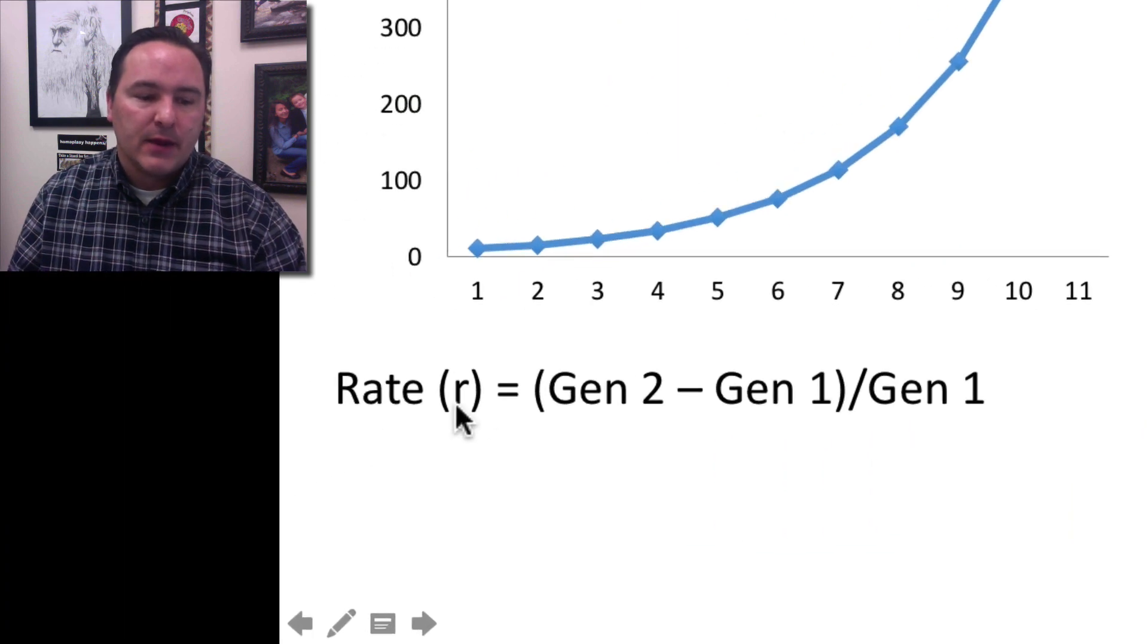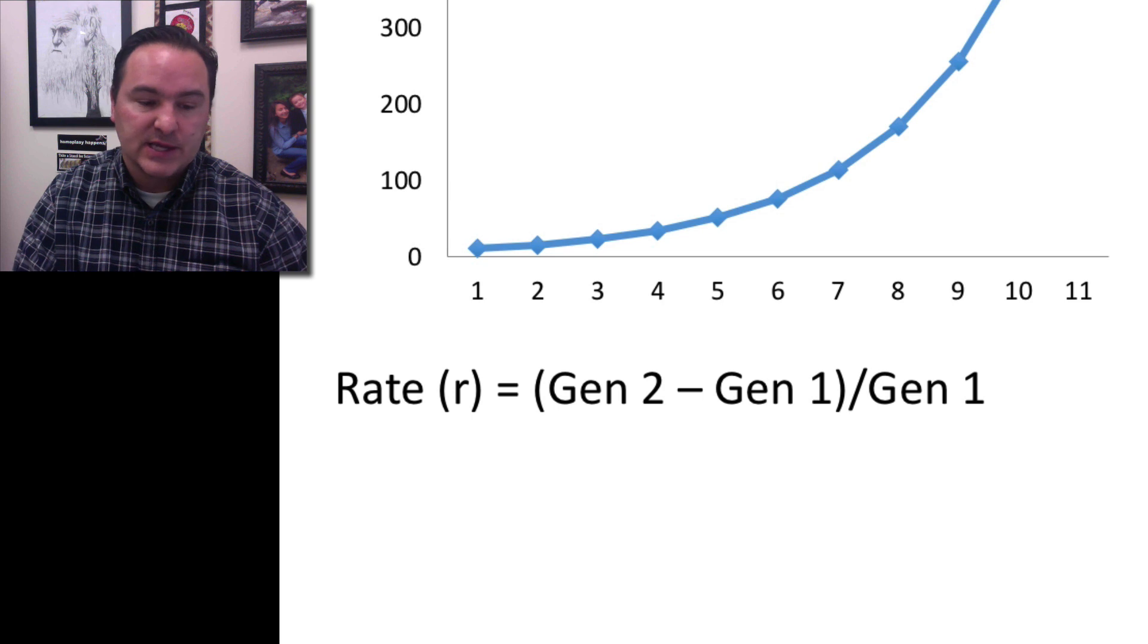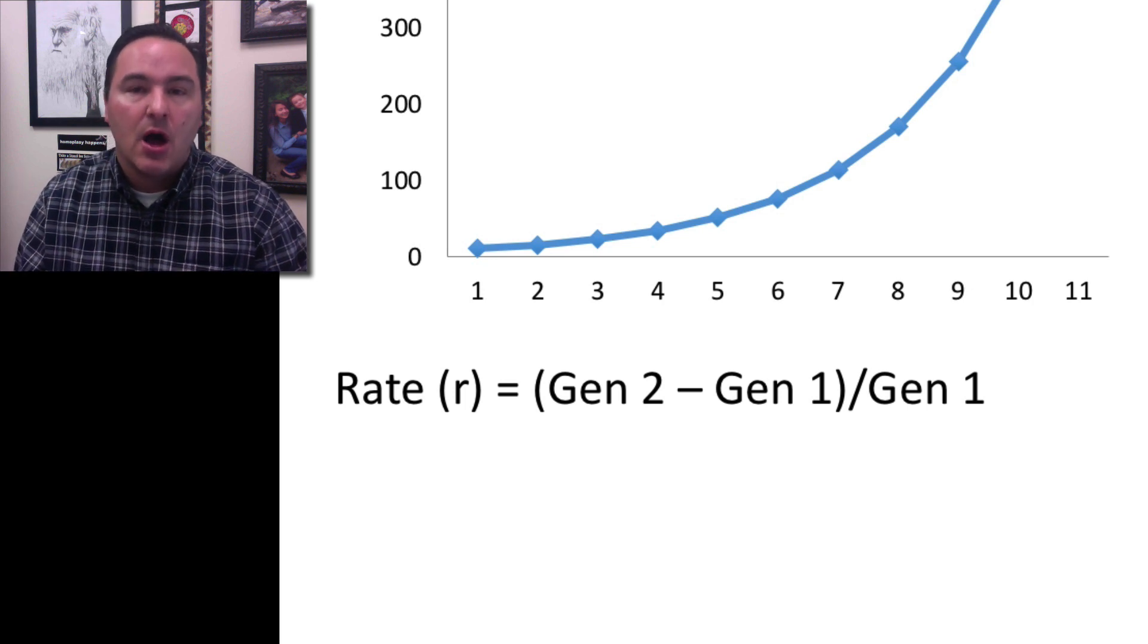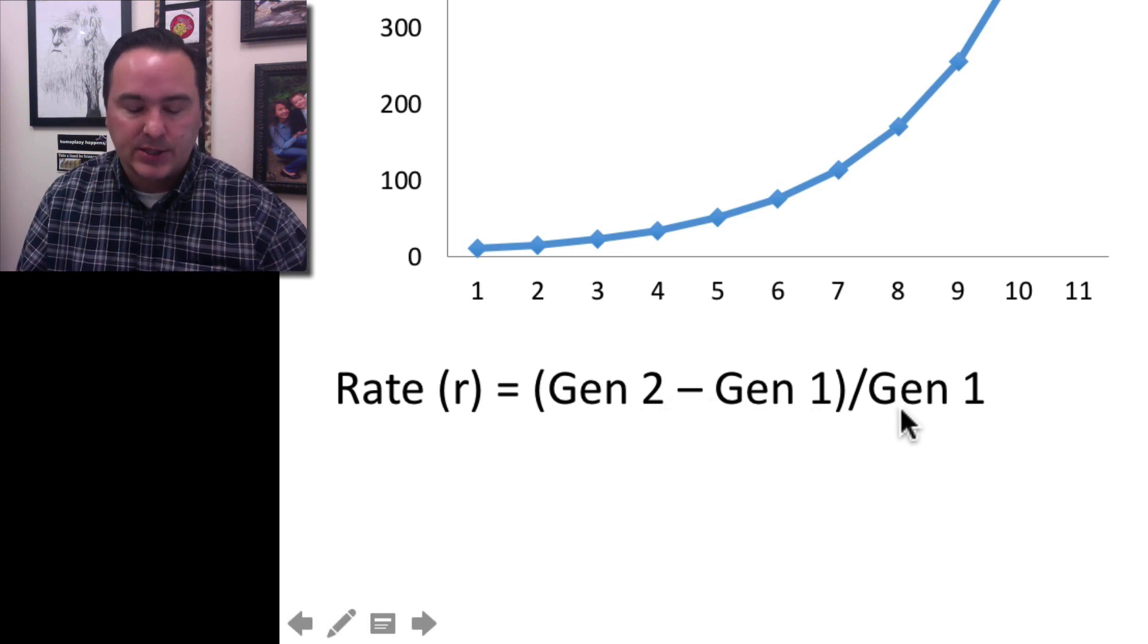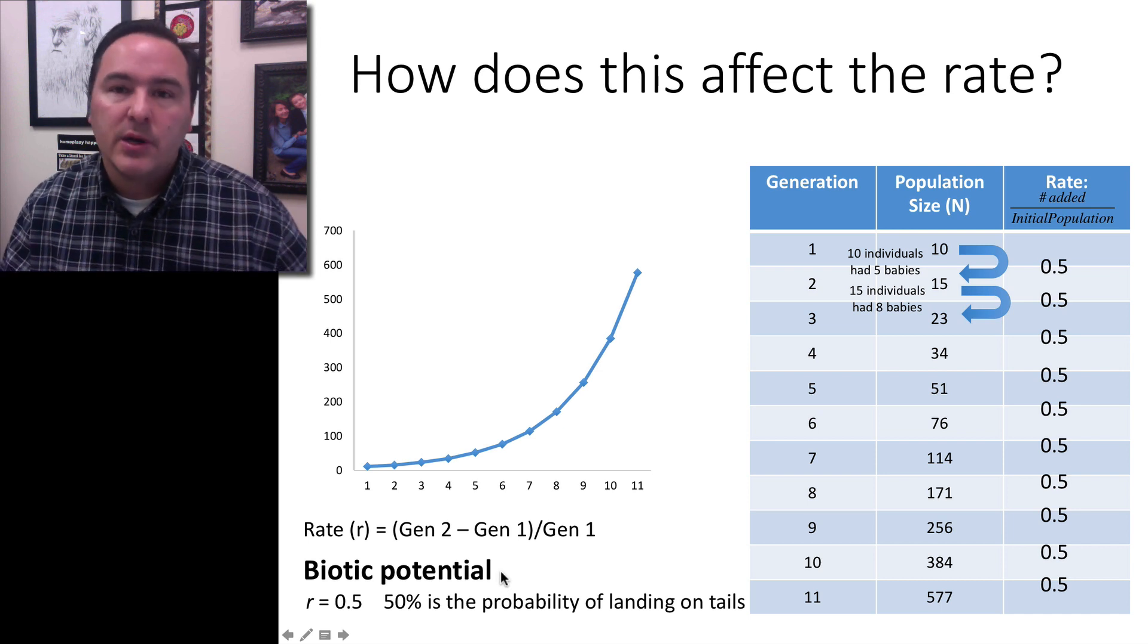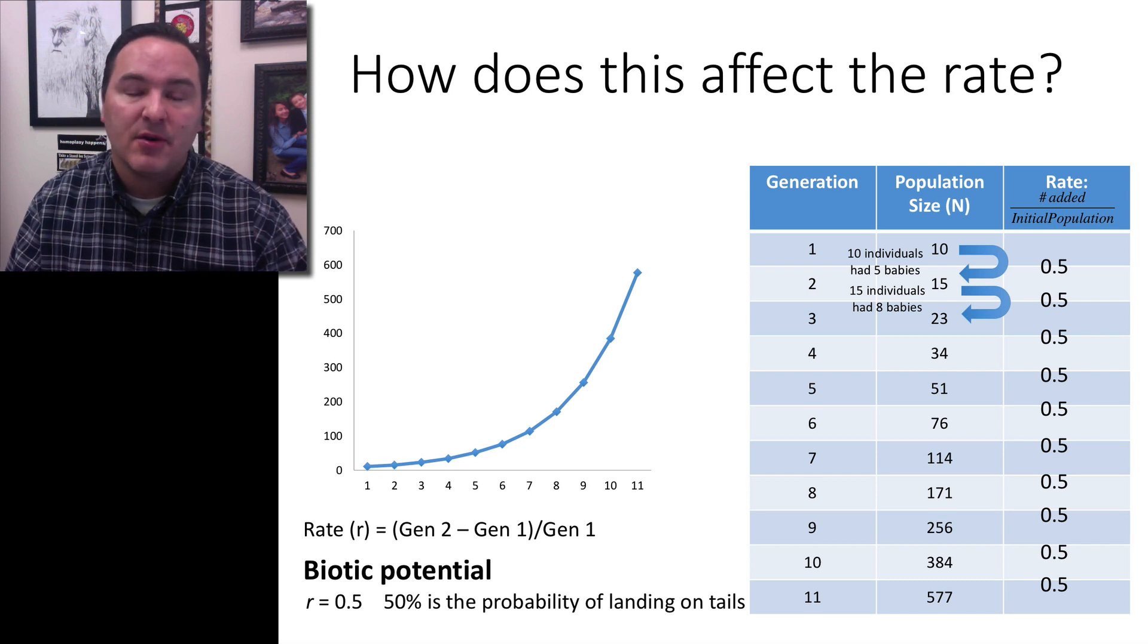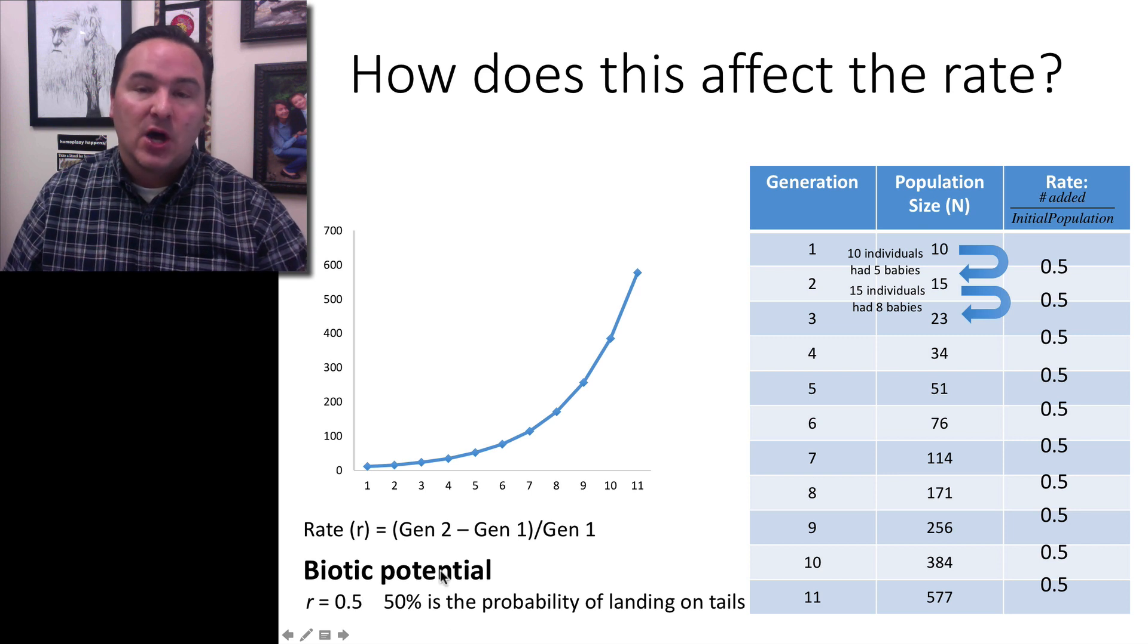We can think about the general equation for rate, this little r. Rate r equals generation 2, in this case the current generation, minus the previous generation, all over the previous generation. So generation 2 minus generation 1, divided by generation 1. That is 0.5. This is also called the biotic potential. We're assuming that on average there are going to be about half the number of offspring as the total population from one generation to the next. That's called the biotic potential.